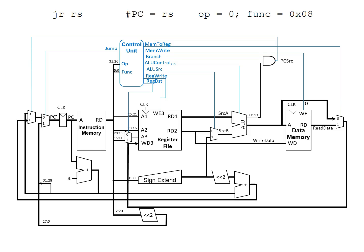We need to make some sort of modification to support this. For simplicity, we're going to add another MUX. This MUX is going to need some sort of control — for now, we're going to call this JR. This MUX, in addition to having the current input, is going to need a new input, and this input needs to come from the output of the register file. So we're going to take what contains RS and feed it into this multiplexer. When JR is one, it will take the output of the register file and feed it into the program counter. This handles the modifications to the data path.